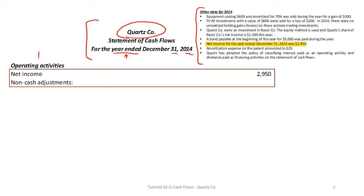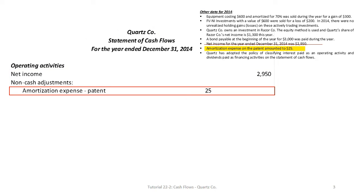The first section of the cash flow statement is the operating activity section, where we identify all the cash flows from operating the company or cash flows used by the company in operations. Our first line item is net income, and from the data our net income is $2,950.